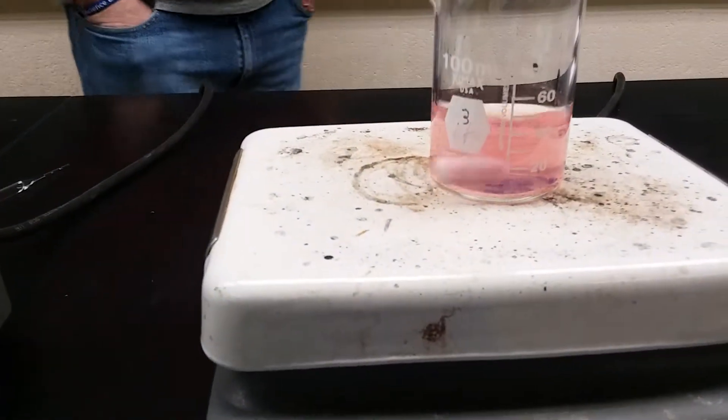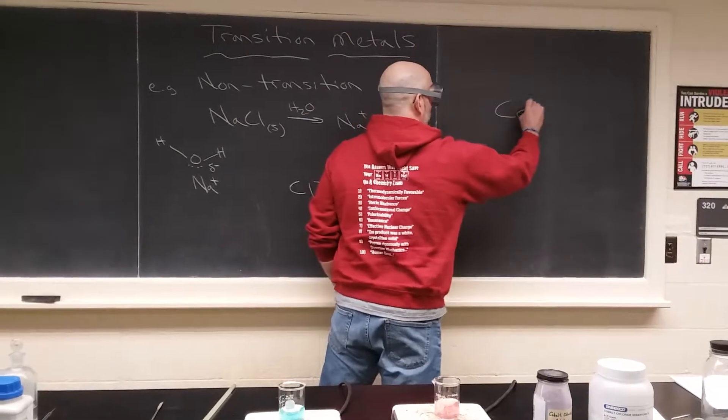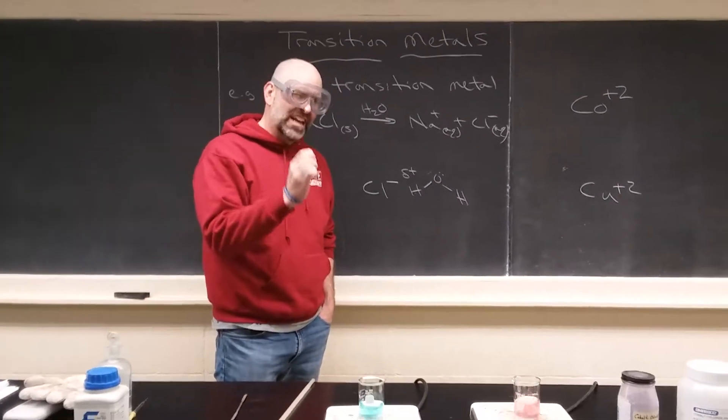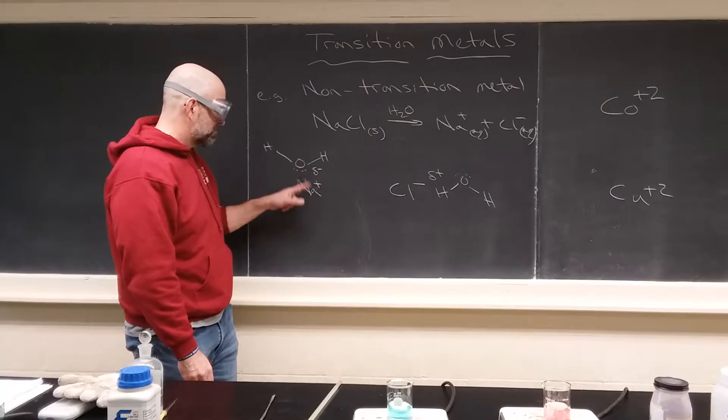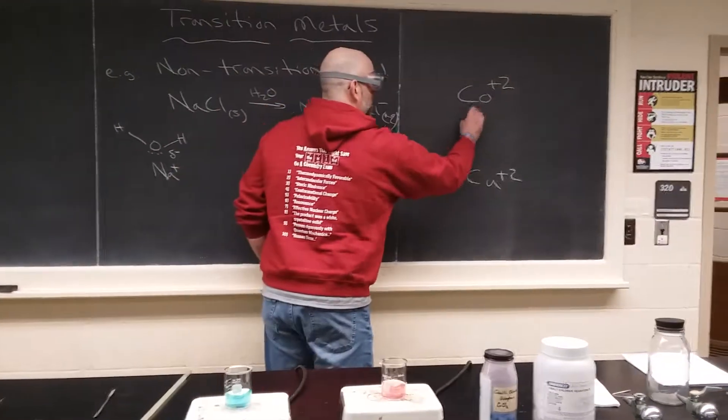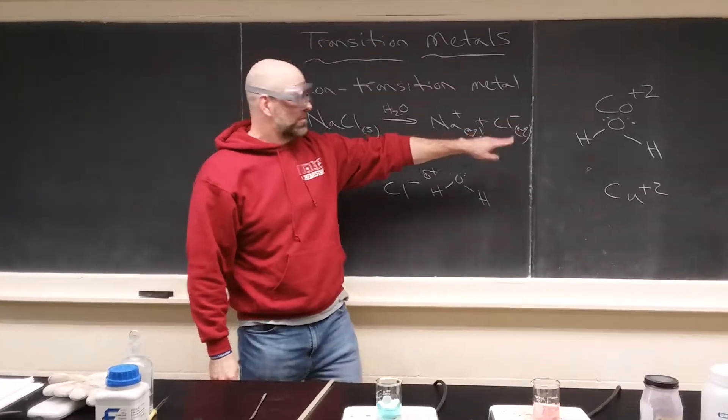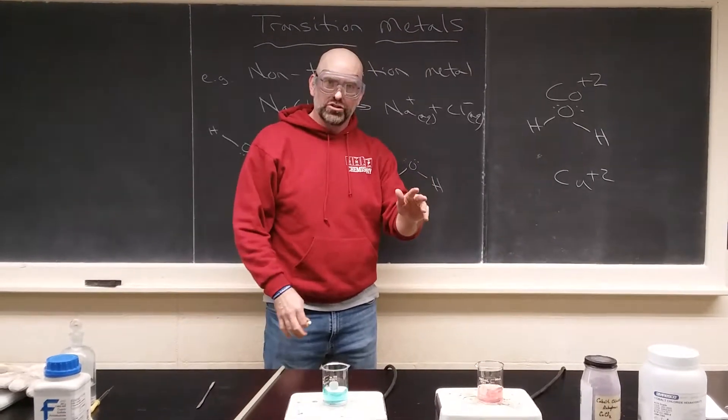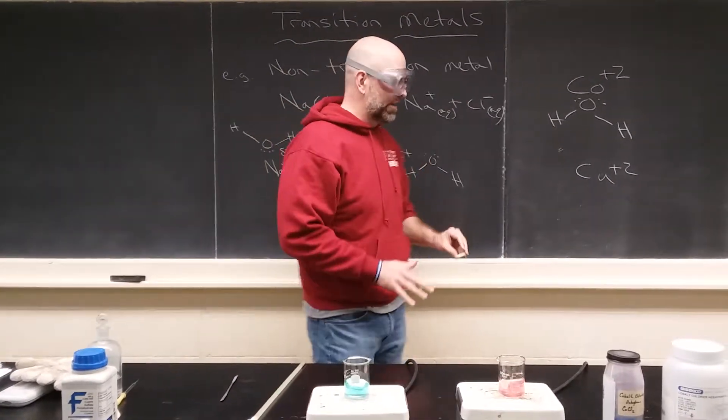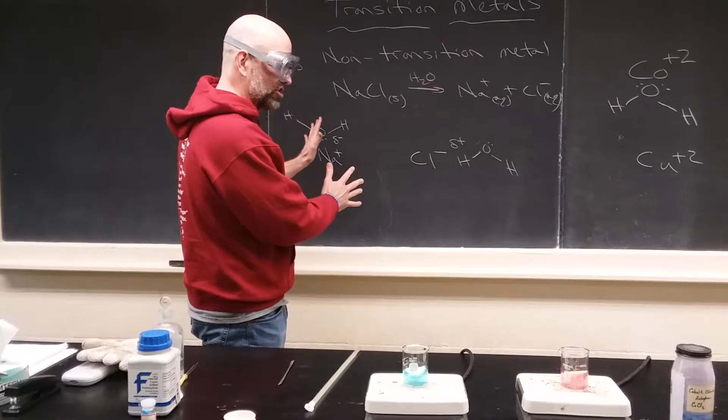So the point here is something different happens when we have cobalt plus two and copper plus two interacting with water. It's not exactly the same as just being surrounded by water, like being solvated. There's something else going on. When water approaches a transition metal cation, and that's only one of them actually, in both these cases there's going to be six waters that approach it. You might remember when there's a central atom with six things, that's called an octahedral geometry. The color changes, it can't be explained the exact same way as a non-transition metal ion.